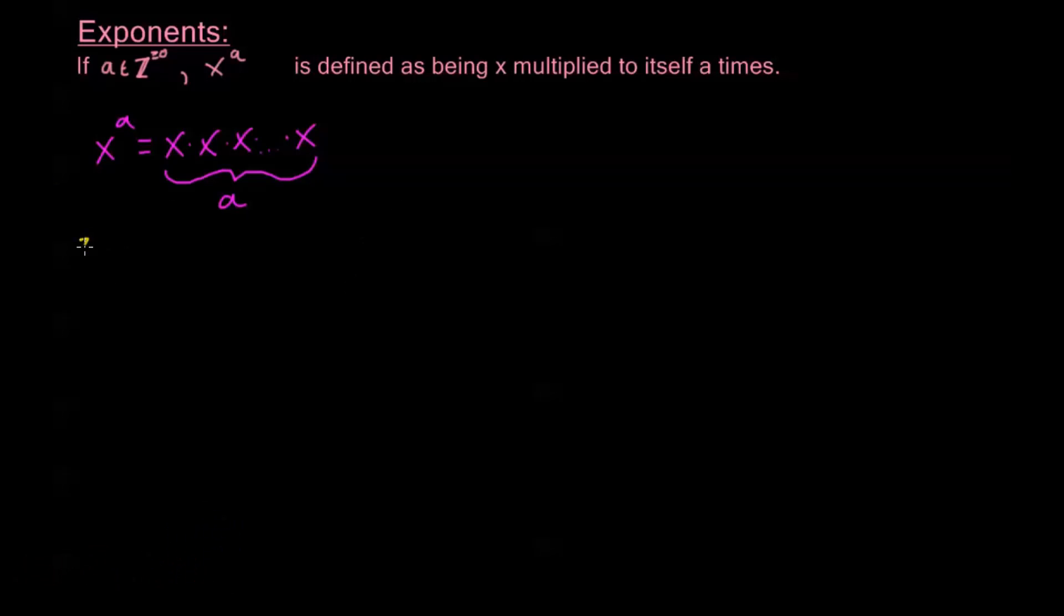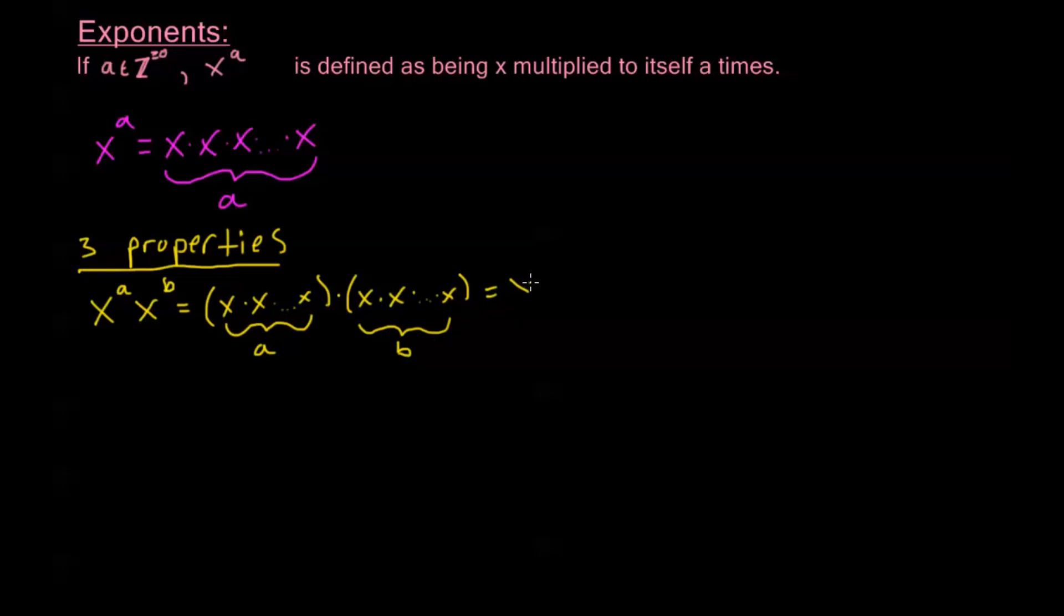So let's take a look. We have three properties. And we'll go ahead and derive them real quick. If we have x to the a times x to the b, using our definition up here, well that's x multiplied to itself a times times x multiplied to itself b times. So we have this result: x to the a times x to the b is equal to x to the a plus b.